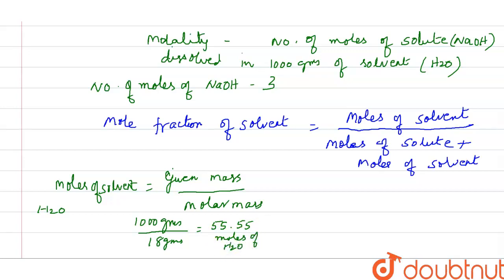Now let us substitute and find out the answer. Mole fraction of solvent: moles of solvent 55.55 divided by moles of solute, sodium hydroxide is 3, plus moles of solvent 55.55. When you solve this, you get the answer 0.95.